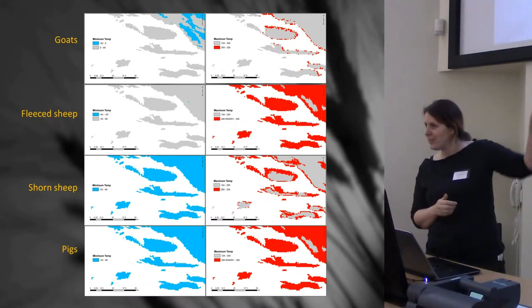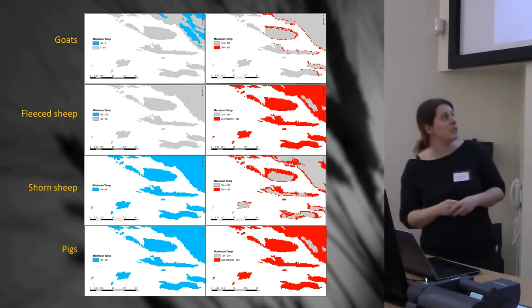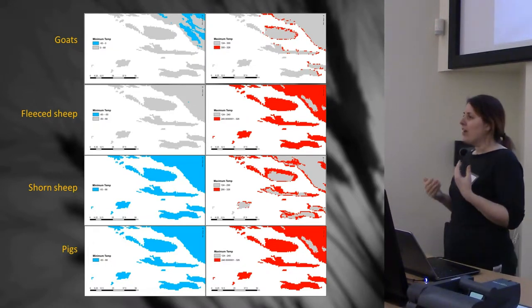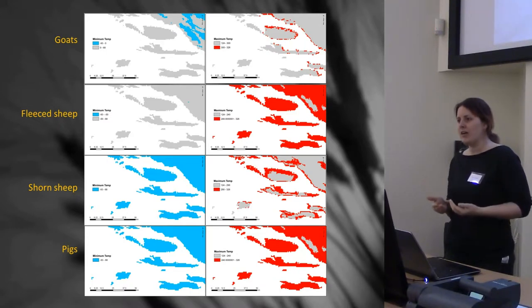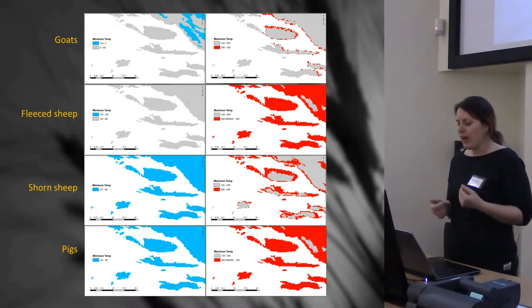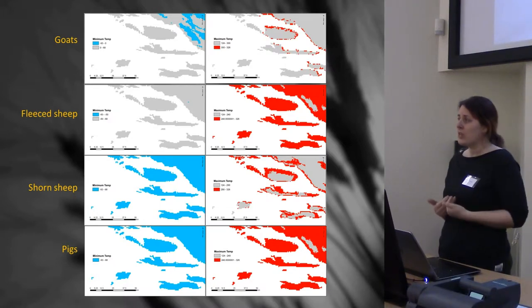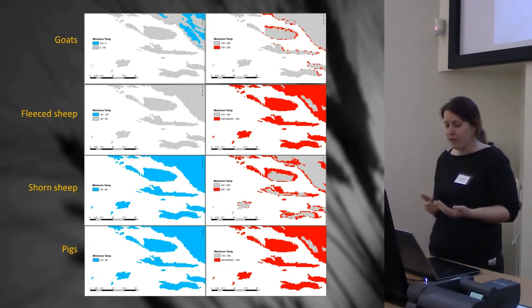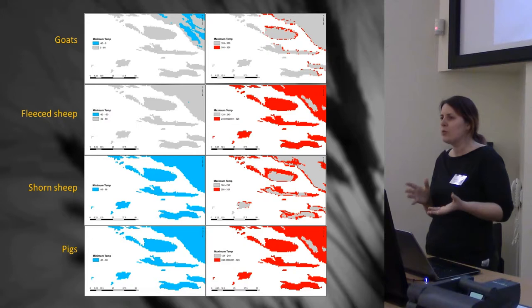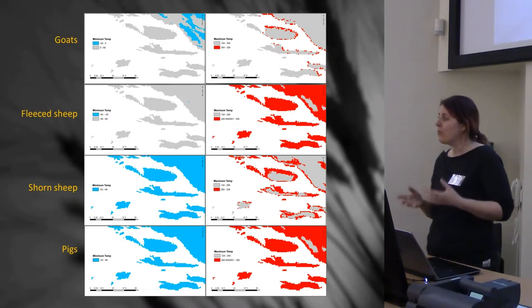I've got fleece sheep and shorn sheep as two separate things, but they can be combined. Goats do pretty well, pigs are seriously in trouble. The idea behind this is not that no pigs are ever kept here — but that if they are going to be kept here, you're going to have to rethink your economic strategy. You're going to have to think about things like whether you're going to stall them, keep them in woodland, because obviously the temperature will drop under certain conditions. So if you can apply these things, it might give you some indicator of different economic strategies these people might be carrying out.